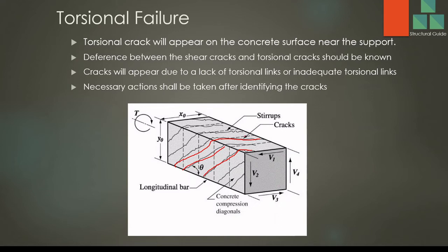How does torsion cause failure in the beam? In a simple beam with a cantilever where the slab does not continue on the other side, when a load is applied to the cantilever slab, the beam will rotate. There will be rotation — that is torsion. If we have not provided adequate reinforcement, specifically torsional links, to cater for this torsional moment, the beam will fail. We have to provide torsional links and reinforcement as required by the design to avoid failure.